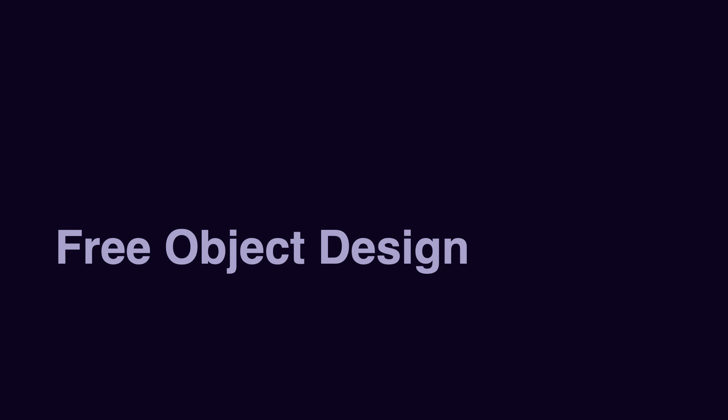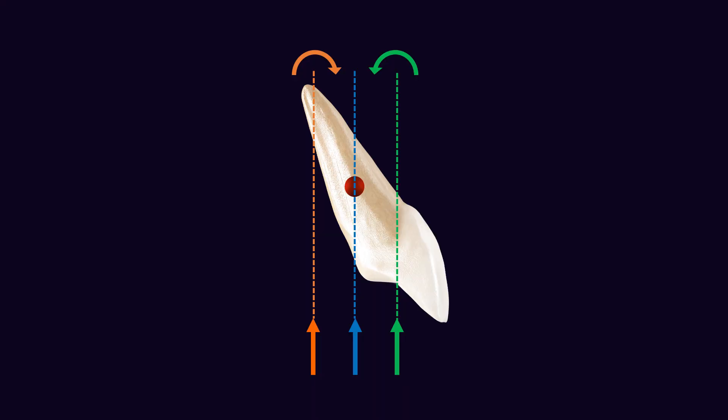It means how much we allow the target unit to move in different dimensions freely, and how much we control some of the movement of the target unit. In this regard, the simplest design is free object design. In this design, there is no restriction of the movement of the target unit. We just apply a force, and based on the relationship between the line of action of the force and the center of resistance, the type of movement is defined.